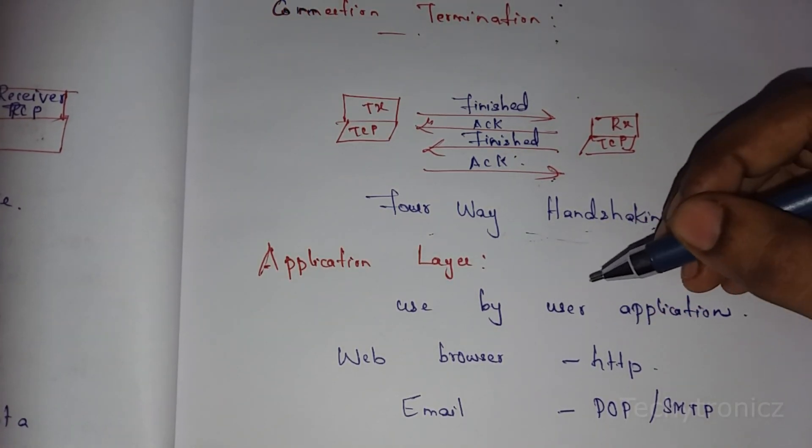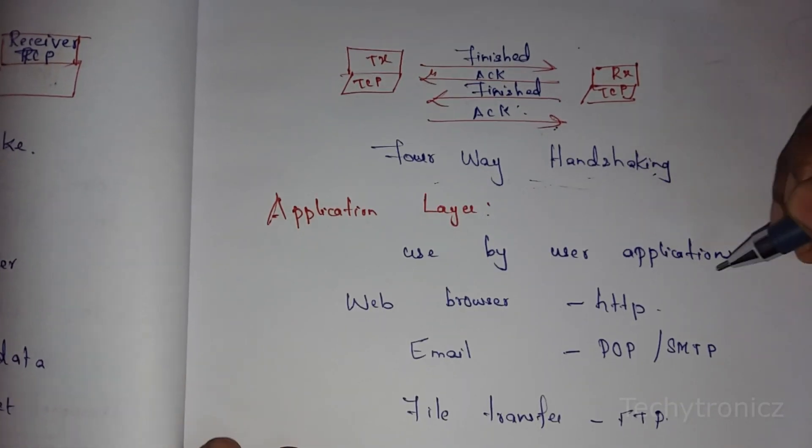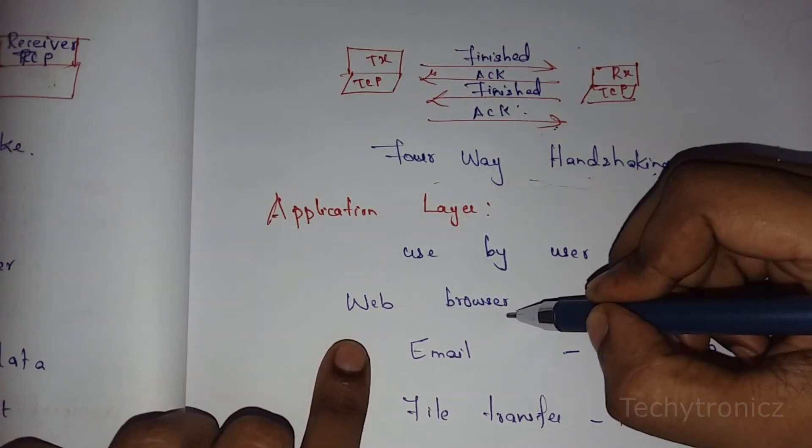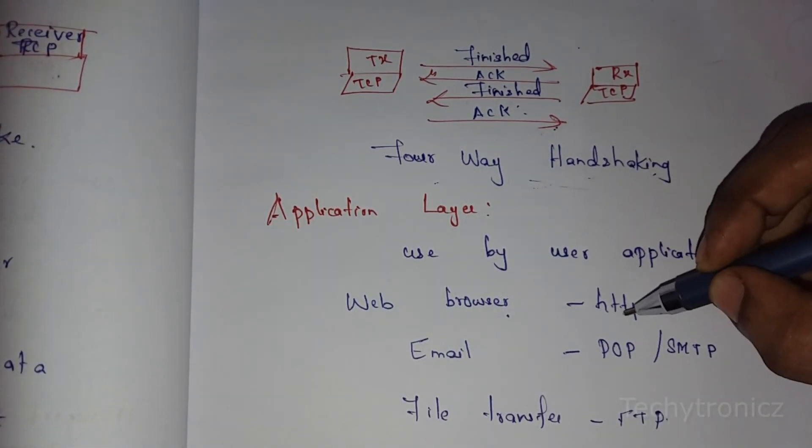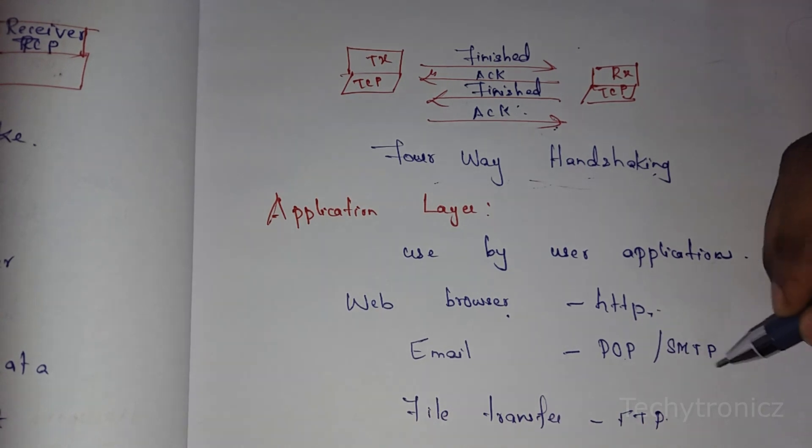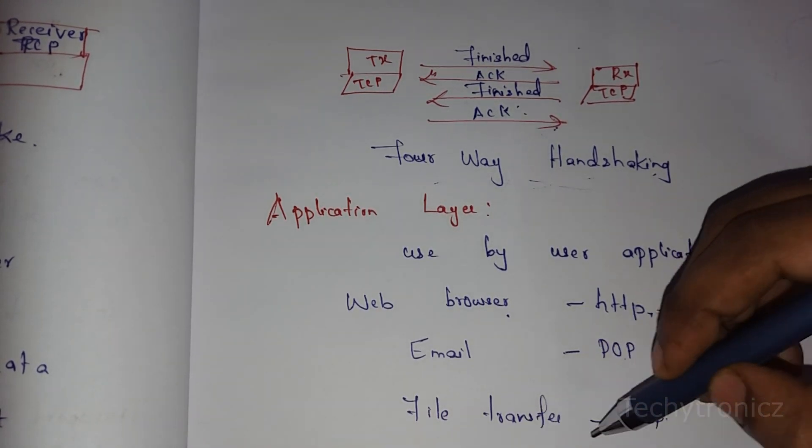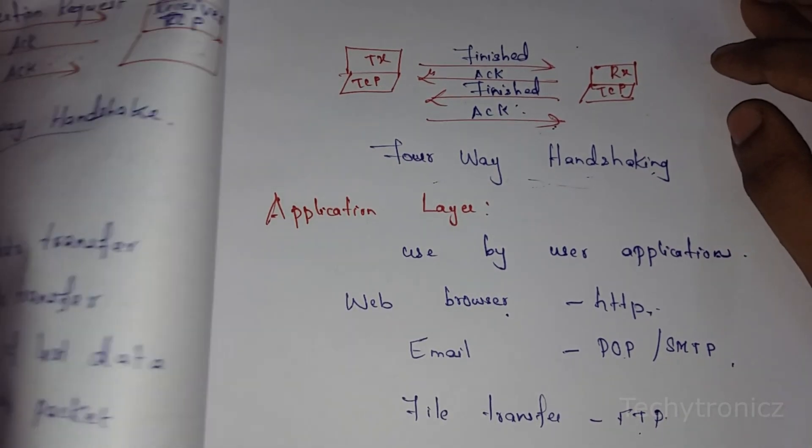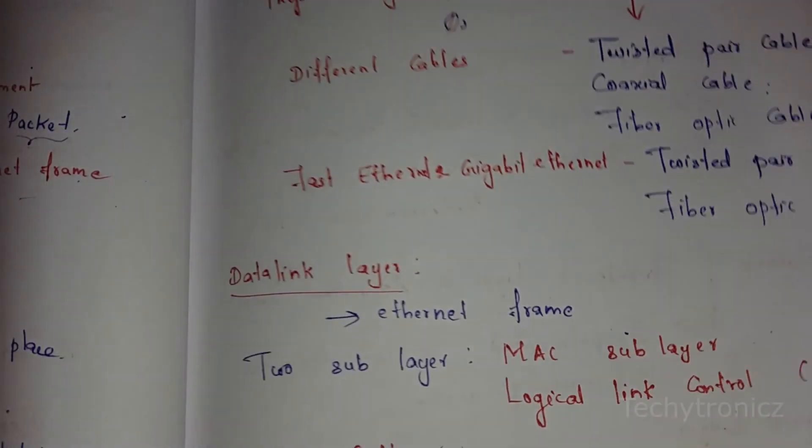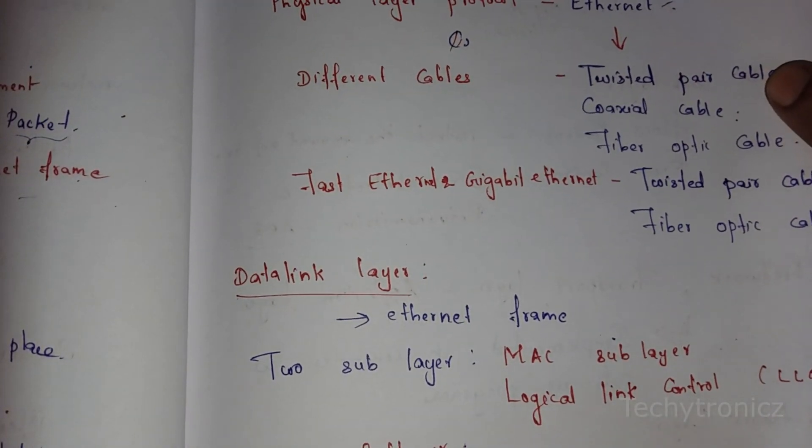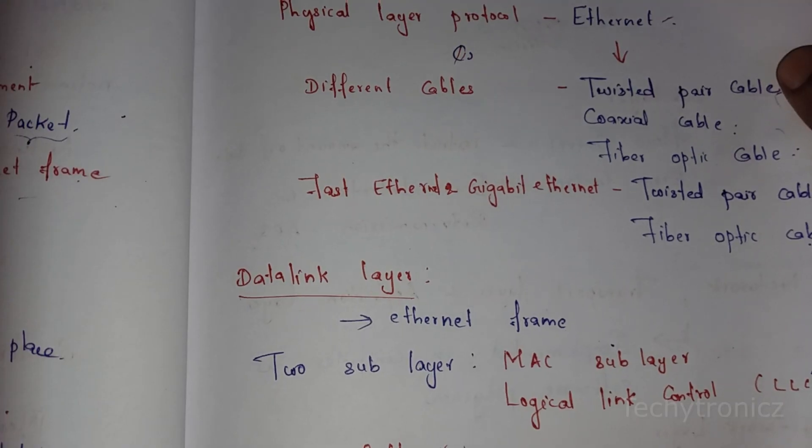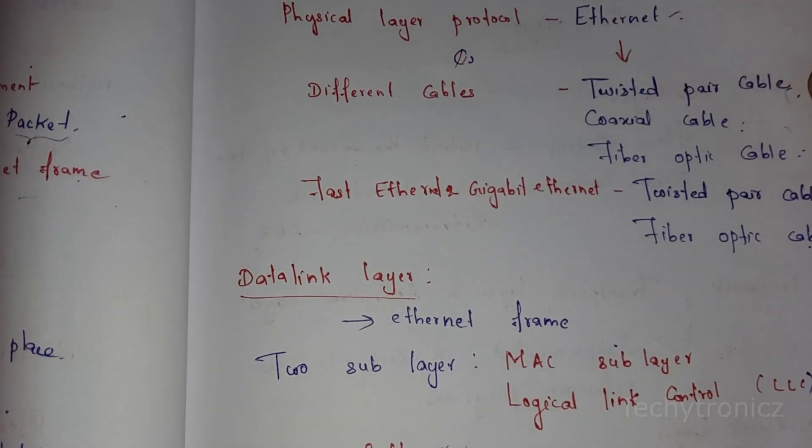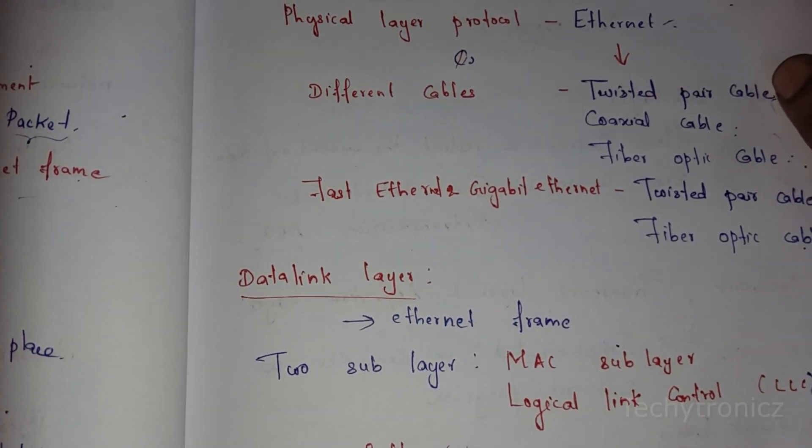The Application Layer is used by user applications like web browsers using HTTP protocol, email using POP or SMTP protocols, and file transfer using FTP protocol. These are the different layers in TCP/IP protocol: Physical Layer, Data Link Layer, Network Layer, Transport Layer, and Application Layer. I hope you all understand this video. Thank you, students.